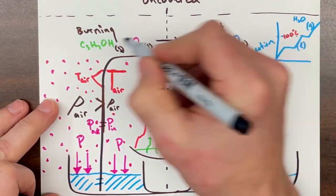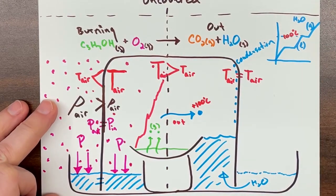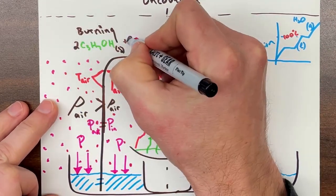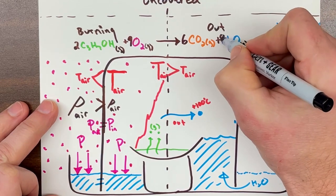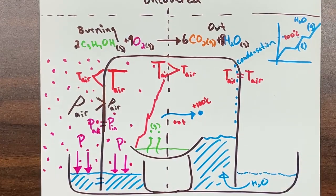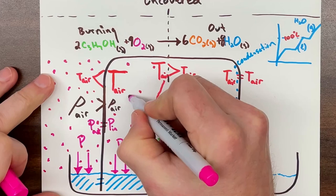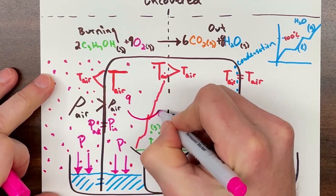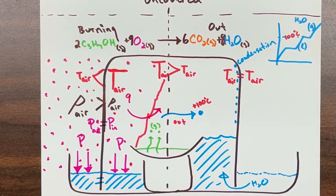I think the ratio of how this reaction occurs is also important. Two alcohols react with nine oxygens to produce six carbon dioxides and eight waters. Now at this stage, just know I'm simplifying things a bit by leaving out nitrogen, which is the majority of what we think of as air. Let me know how you think nitrogen alters the explanation.